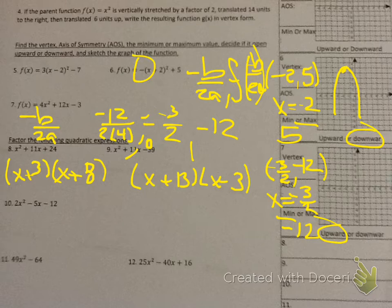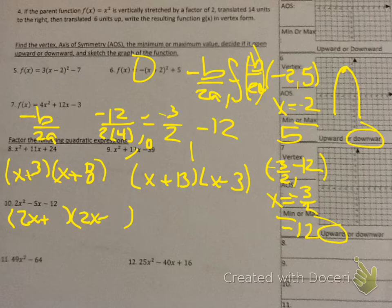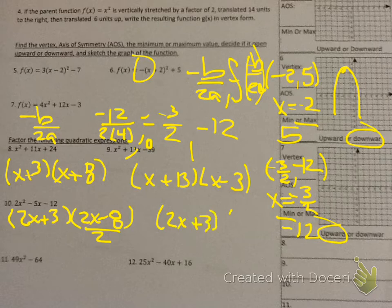Number 10: if there's a 2 in front of the x squared, you're going to put 2x in both parentheses. Minus minus is plus minus, so you'll put plus and minus. Then, 2 times 12 is 24. Factors of 24: 1 and 24, 2 and 12, 3 and 8, 4 and 6. 3 and 8 give me 5, but I want 3 minus 8 to get negative 5. Divide out the extra 2, and you get (2x + 3)(x − 4).